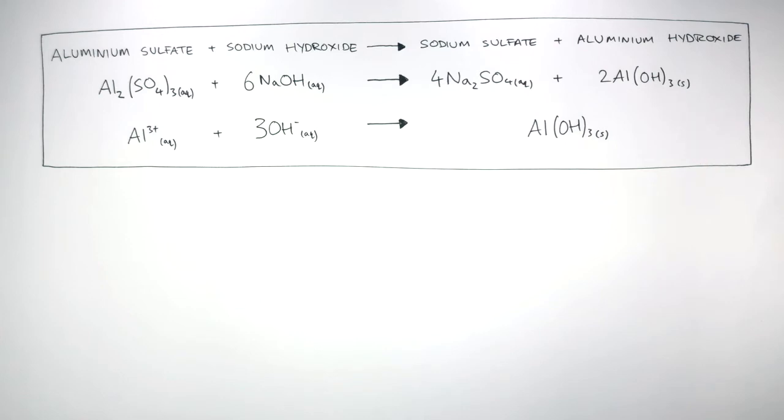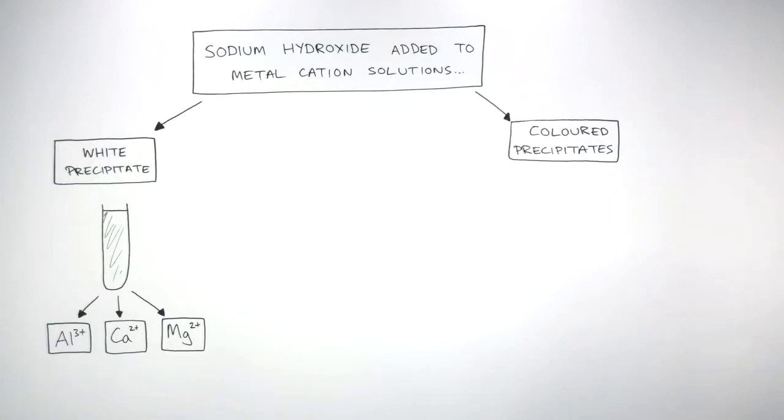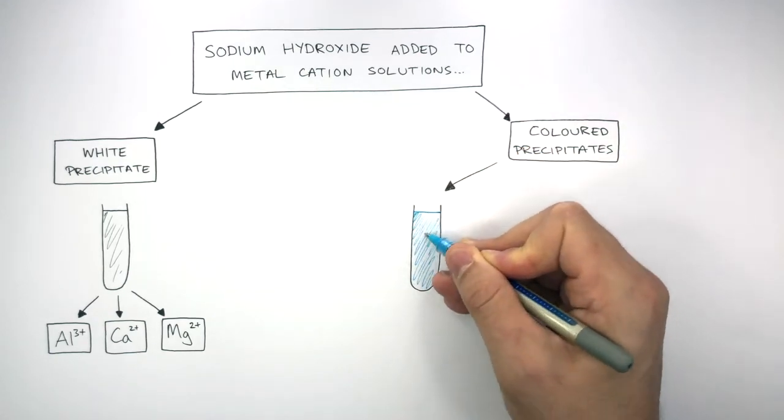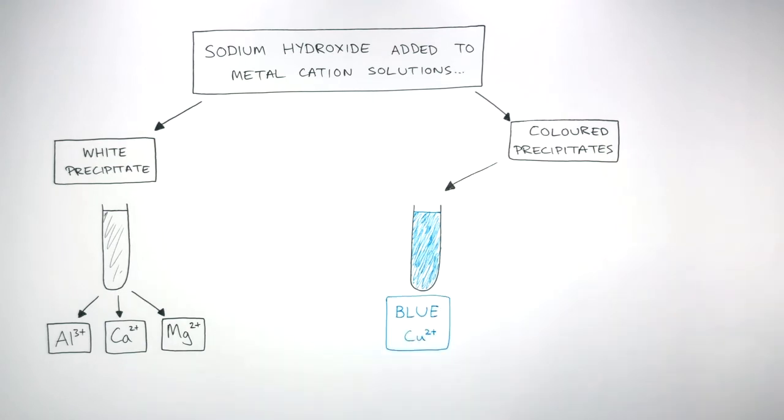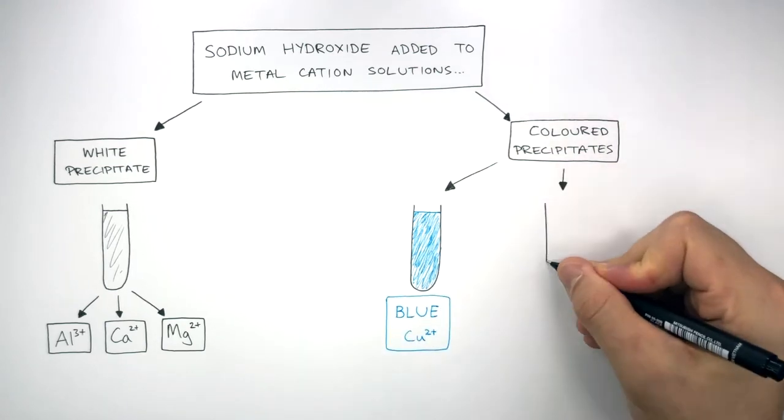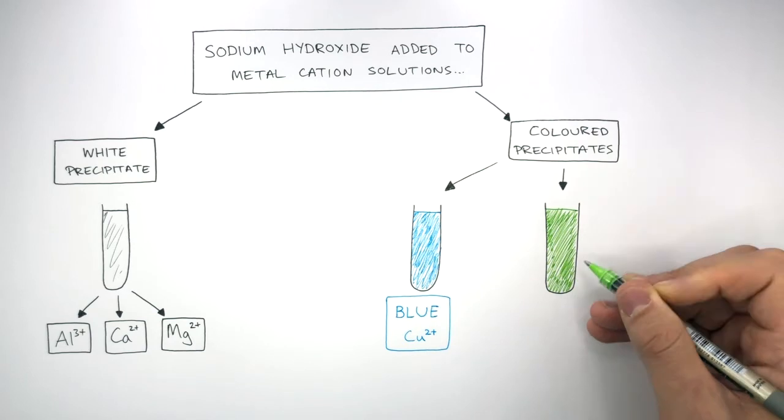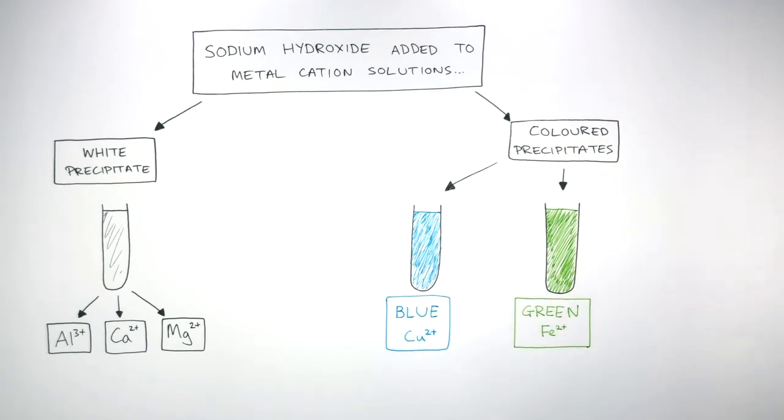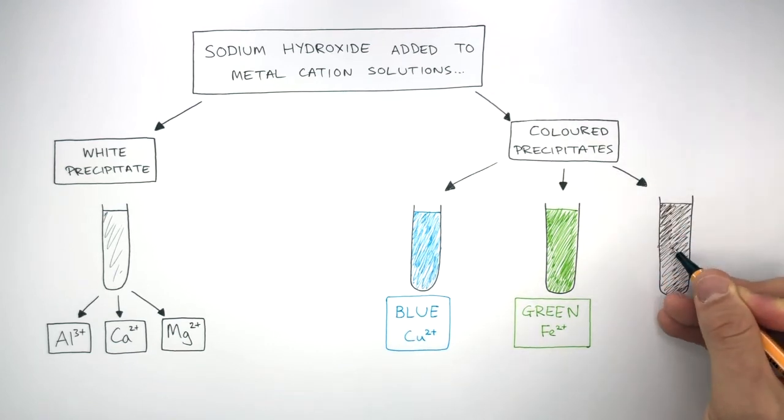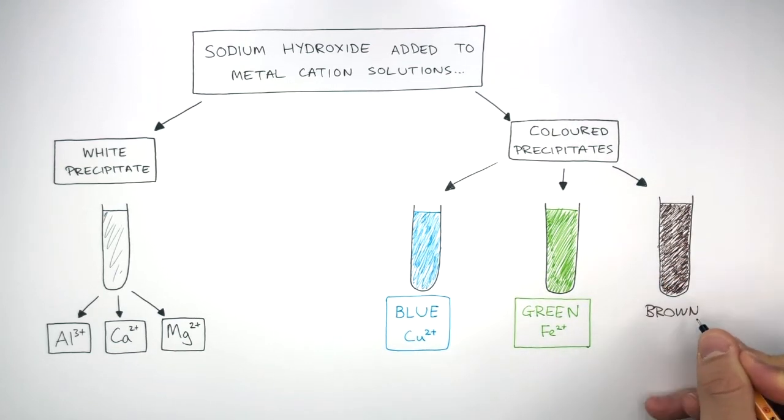Let's now focus on what happens when coloured precipitates are formed. If a blue precipitate forms, it's Cu2+ copper. If a green precipitate forms, it's Fe2+ iron. And if a brown precipitate forms, then the brown is due to Fe3+ iron.